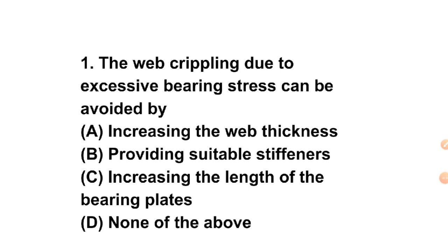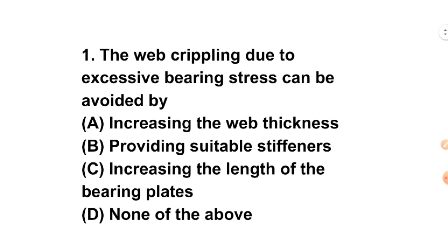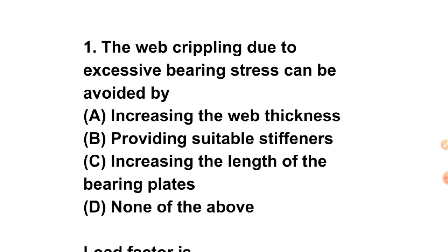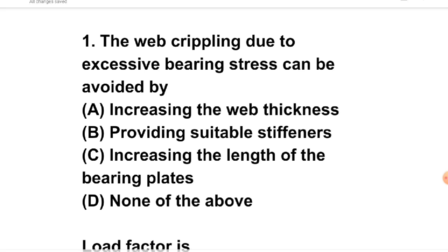Question 1: Web crippling due to excessive bearing stress can be avoided by: A) Increasing the width-thickness ratio, B) Providing suitable stiffness, C) Increasing the length of the bearing plate, D) None of the above. Web crippling is connected to the bearing point, so increasing the length of bearing plates can avoid web crippling. The answer is C.